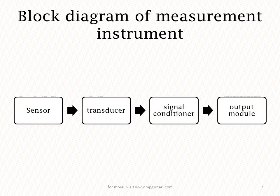This is a simple basic block diagram of any measurement instrument. Koi bhi device agar aap measurement ke liye use karte ho to uska basic block diagram yeh hai — jismein pehle aata hai sensor yaani sensing element, uske baad aata hai transducer, uske baad signal conditioner aata hai aur uske baad output module aata hai. Sensor ka output transducer ko milta hai, transducer ka output signal conditioner ko milta hai, aur signal conditioner ka output output module mein jaata hai.